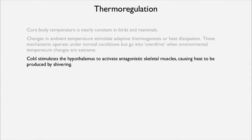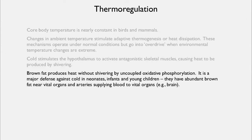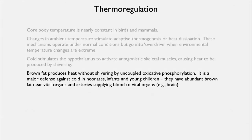Cold will stimulate the hypothalamus to activate antagonistic skeletal muscles, causing heat to be produced by shivering. Brown fat, which is present particularly in human infants but is widely distributed among mammals, produces heat without shivering by uncoupled oxidative phosphorylation. In neonates and infants, abundant brown fat is near vital organs and near arteries supplying blood to the brain — so there are little heat packets located where maintaining temperature is particularly important.